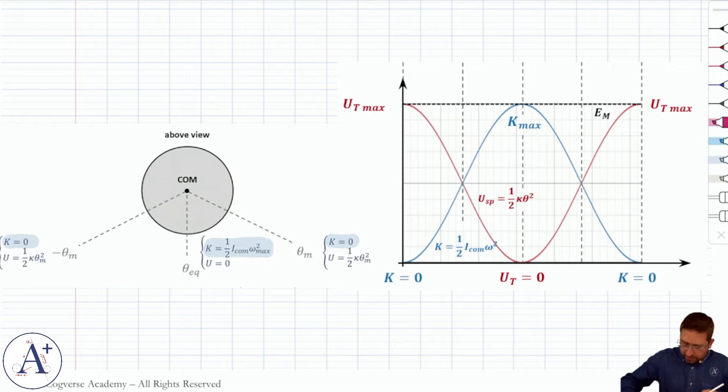For potential energy, torsional potential energy is the greatest when the angle through which the disk spins is greatest. And so that's going to happen at the endpoints, where theta is equal to theta m, or minus theta m. Doesn't matter, you're squaring it. So max potential energy at the endpoints here, and then no torsional potential energy at equilibrium because at equilibrium, theta is equal to zero.